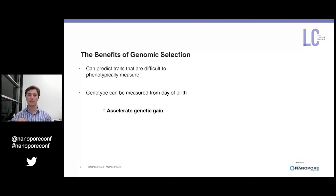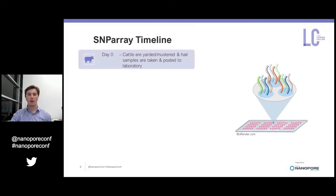Ultimately this means that genomic selection leads to accelerated genetic gain, and this has already been demonstrated in both the dairy industry and the poultry industry.